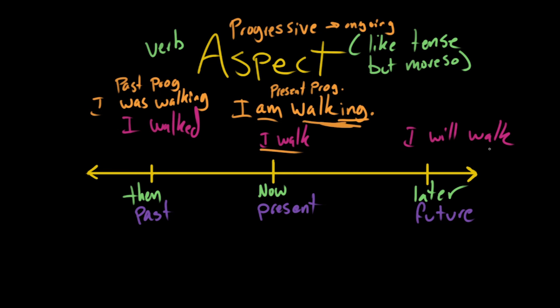Likewise for the future, we're not going to change the walking part. We're just going to put this am part into the future, which is like so: I will be walking. That's the future progressive.